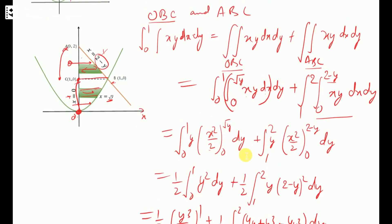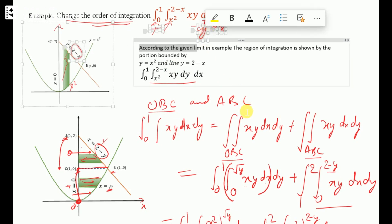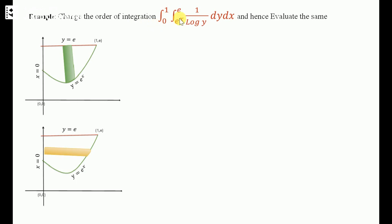So when you change the order of integration, remember that the limits of integration also change. If you first integrate with respect to dy then dx, you are taking a strip parallel to the Y axis, so Y's limits are in terms of X and X's limits are constant. If you change the order and first integrate with respect to X, then X's limits are in terms of Y and Y's limits are constant. In both cases the value of the integral is the same. We use change of order of integration because it sometimes reduces the complexity of the integration.